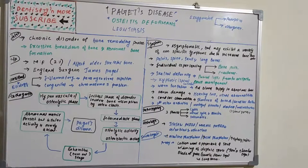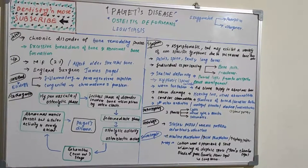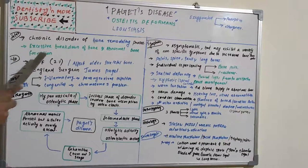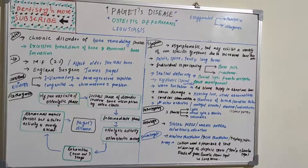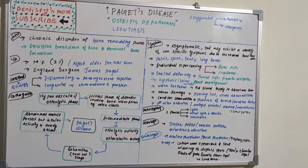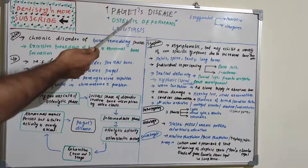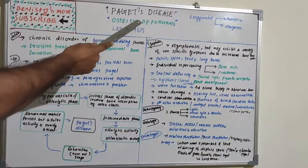Paget's disease is a chronic disorder of bone remodeling. The normal bone formation and bone resorption is disturbed or exaggerated, resulting in excessive breakdown of bone and abnormal bone formation. The routine nature of bone remodeling is disturbed, and it is also known as Osteitis Deformans.